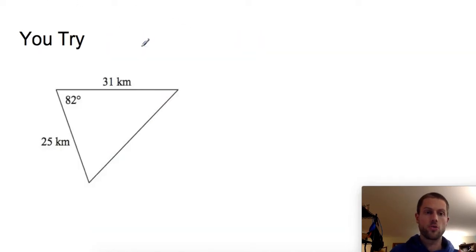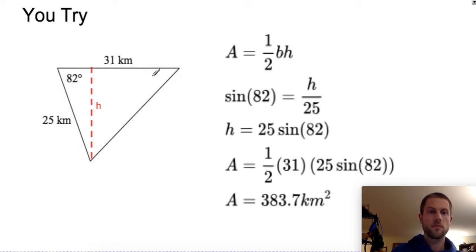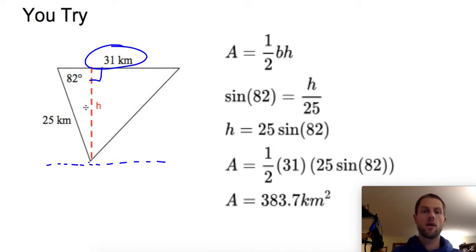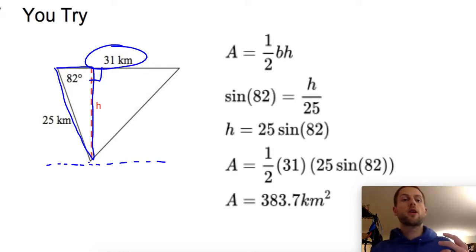Here's an example for you to try — do exactly what I did. Give this problem a shot, and when you're ready, resume the video to see the answer. For this one, I called the 31-kilometer side my base, dropped an altitude to find H in the right triangle formed, and came out with a final area of 383.7 square kilometers. Those are the acute triangles.